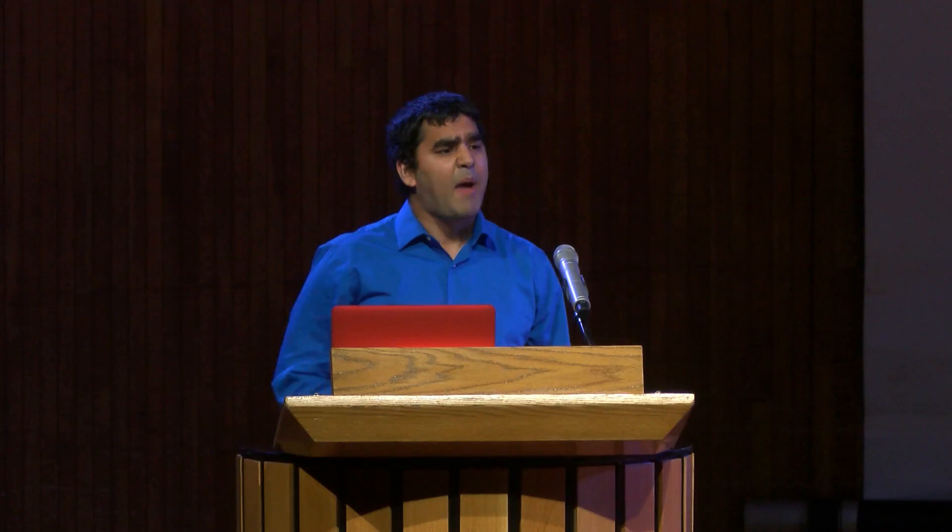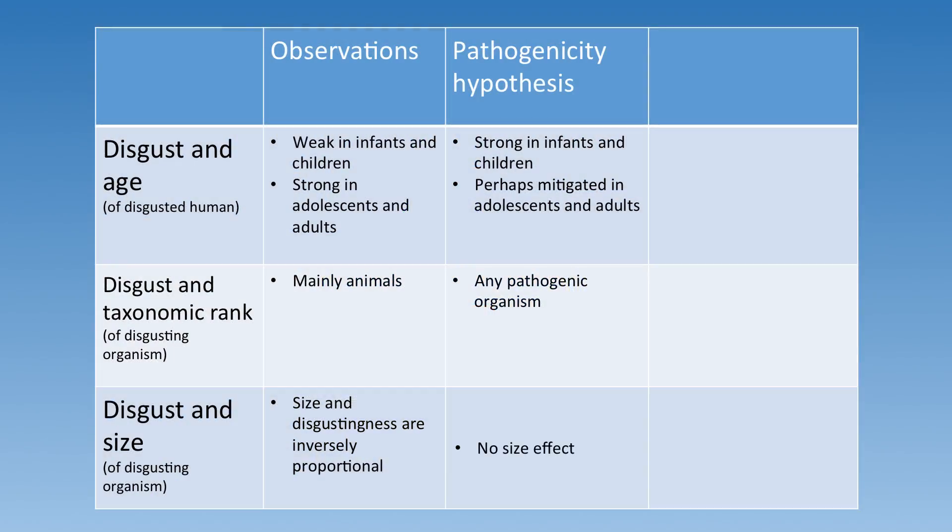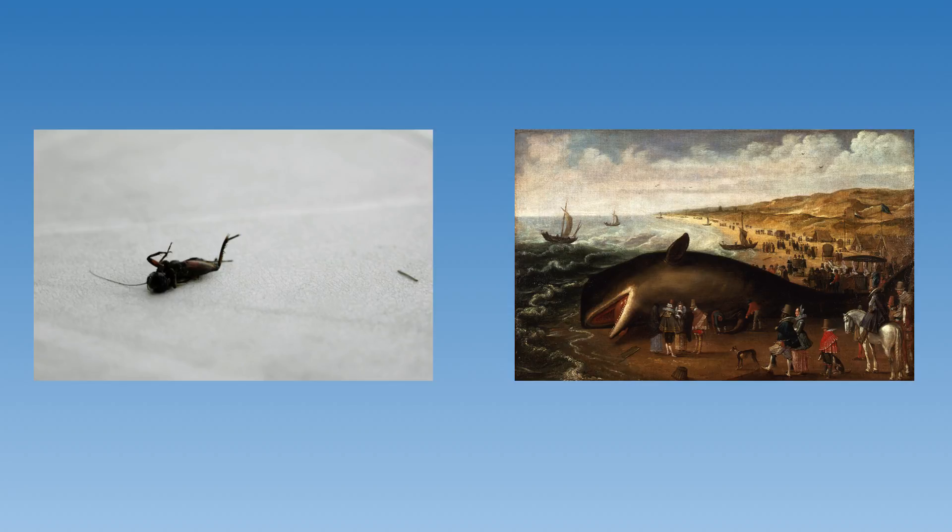And the pathogenicity hypothesis neither predicts nor even explains the relationship between disgust and animal size. Surely, if something as nutritious as a cricket produces disgust, while a dead, rotting pile of blubber that is potentially exploding attracts a crowd, we must reject the pathogenicity hypothesis. But if we did not evolve disgust towards dead animals to avoid pathogenic exposures, what were our ancestors trying to avoid?